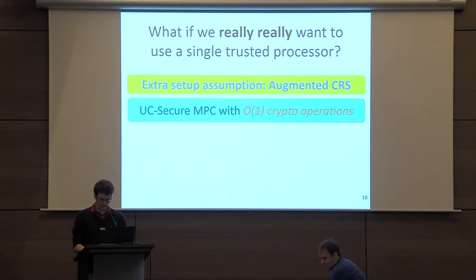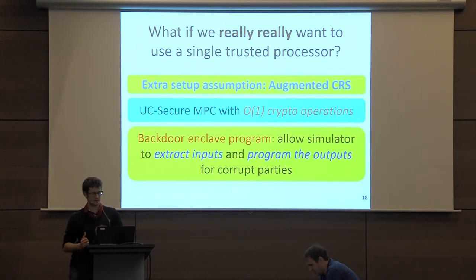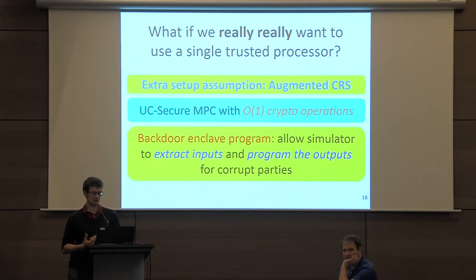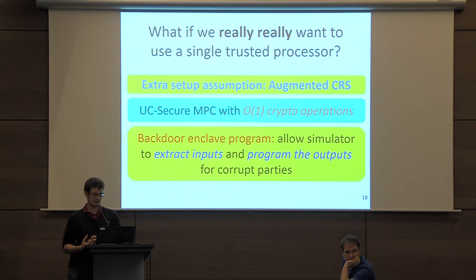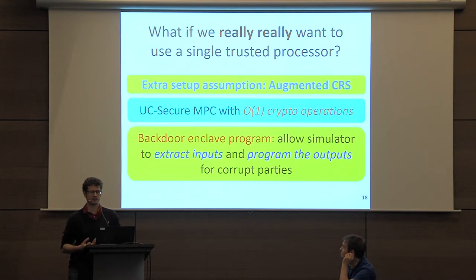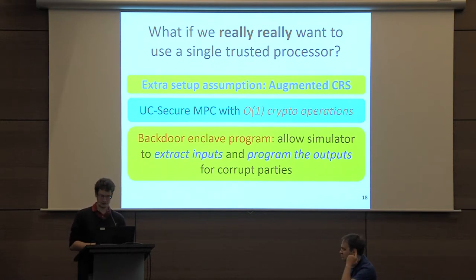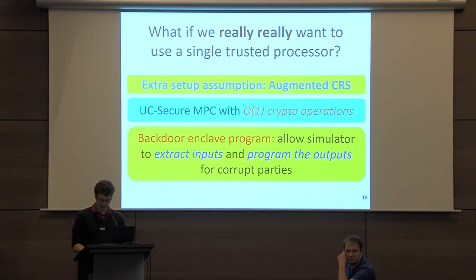Although we already know from prior work that just from this augmented CRS you can get secure MPC, the protocols you get when including trusted hardware are interesting because the communication complexity between parties doesn't depend at all on the complexity of the program being run — since the program just runs inside the secure hardware. From a technical point of view, what's quite interesting is that to get the simulation proof to go through, we need to embed some backdoors into the program that's run in the enclave. This notion of backdooring programs has come up in work on indistinguishability obfuscation, but it wasn't clear to us that it would pop up in this setting as well. Actually, most of the protocols we show in our paper need some notion of backdoor in the programs.